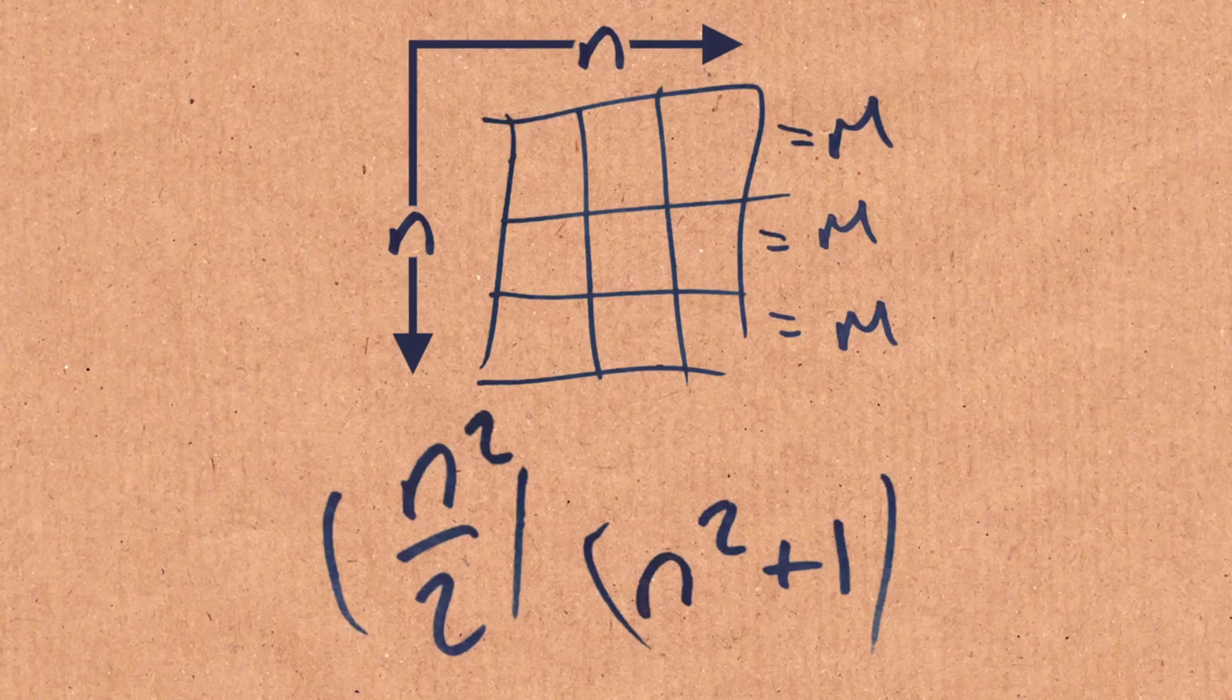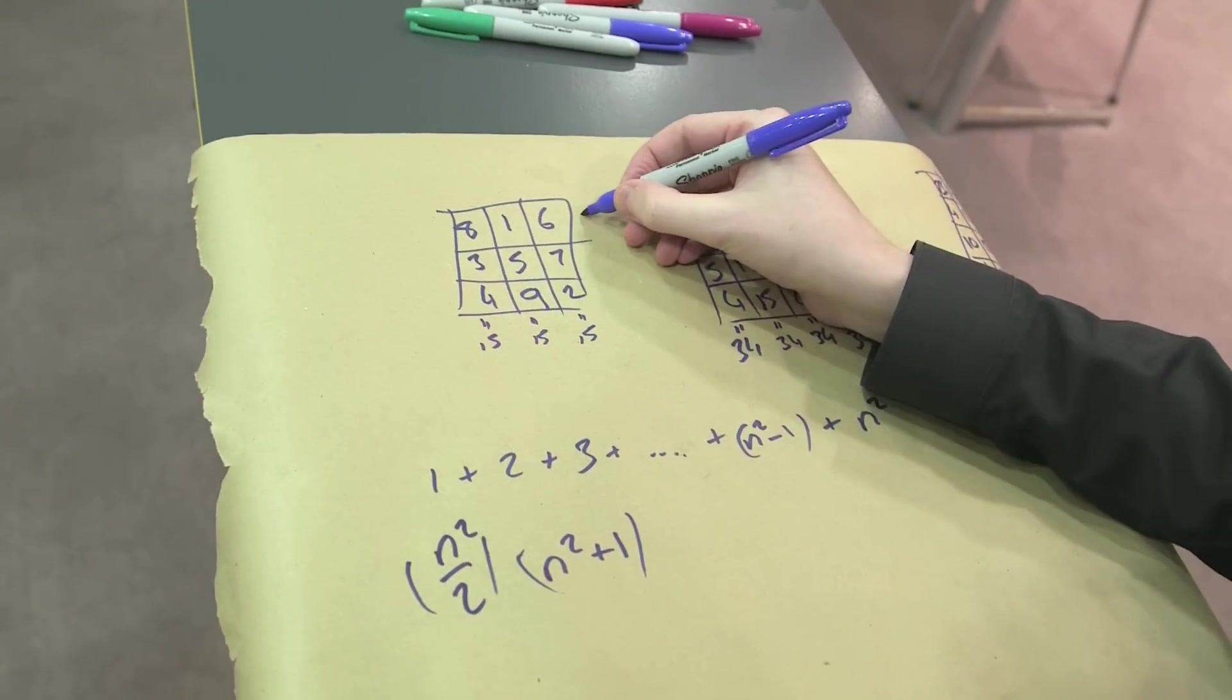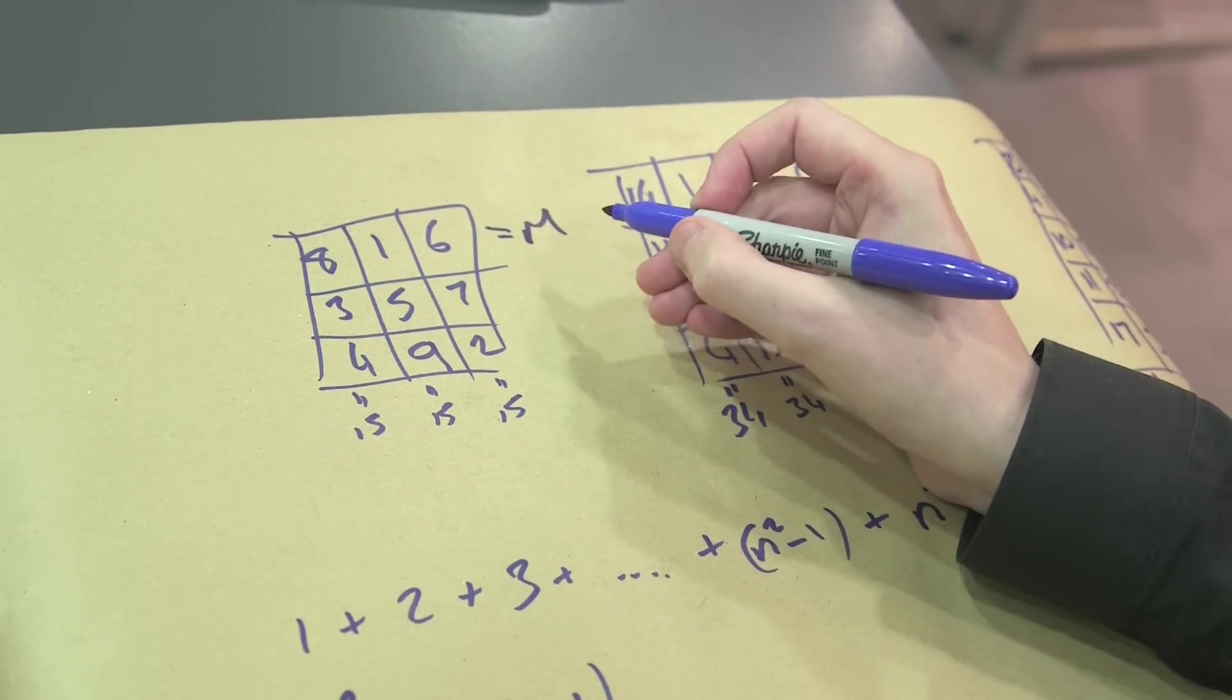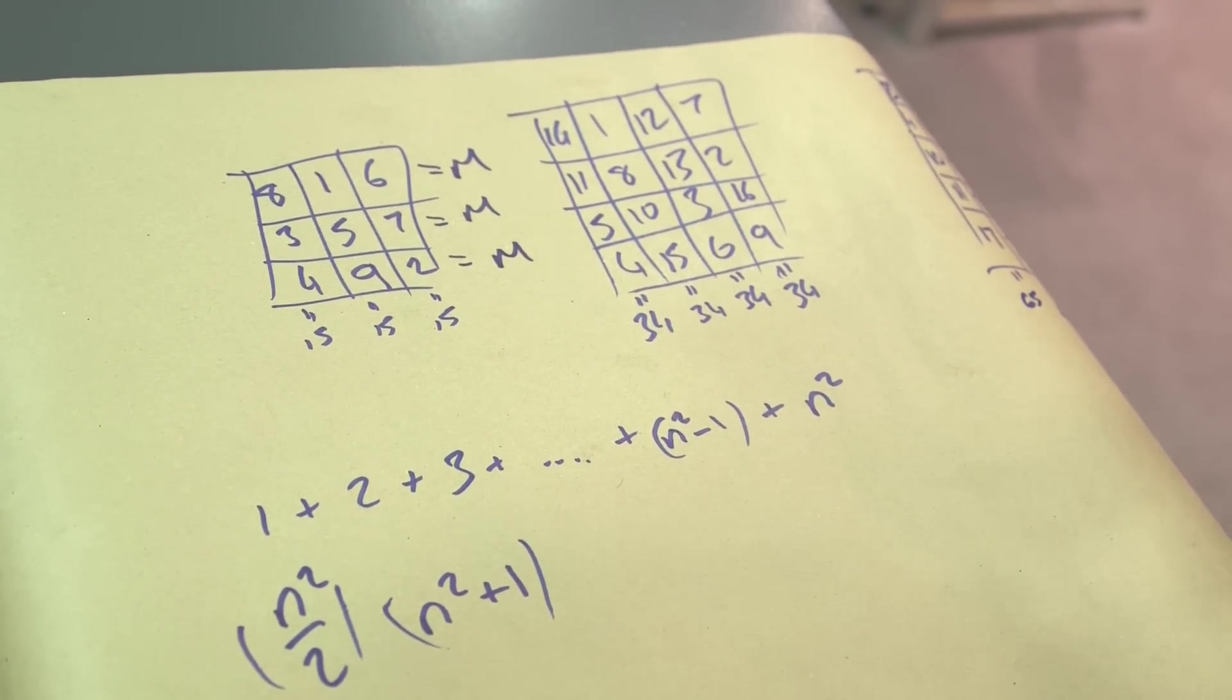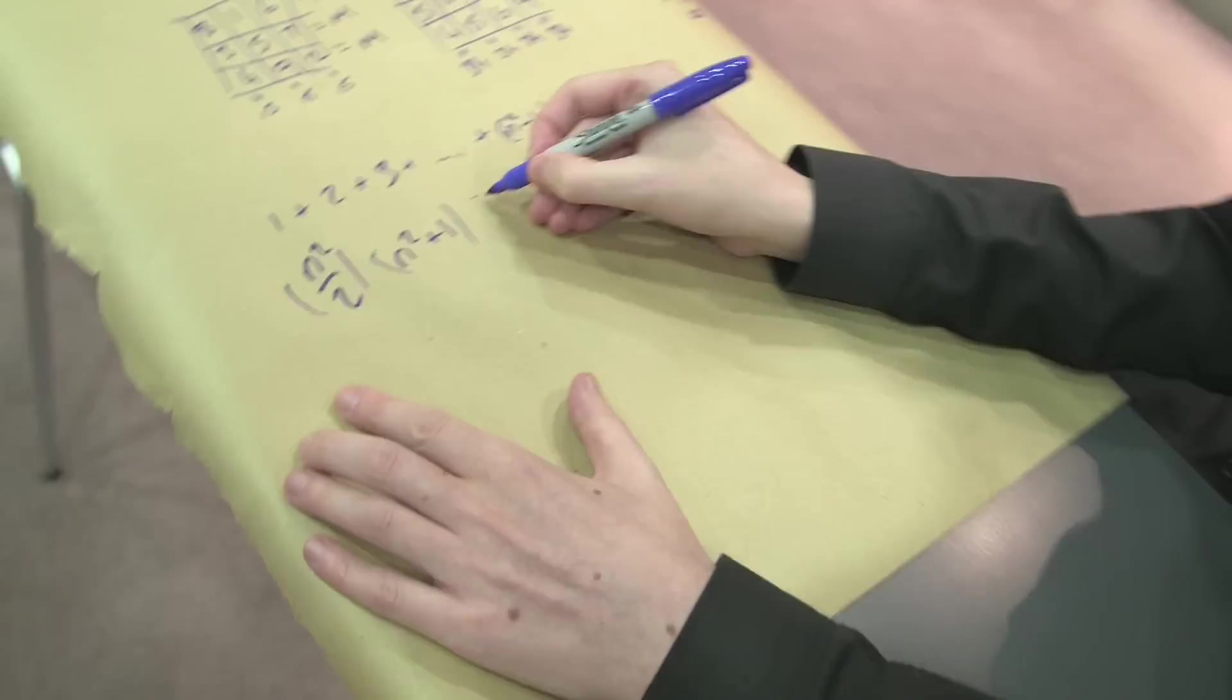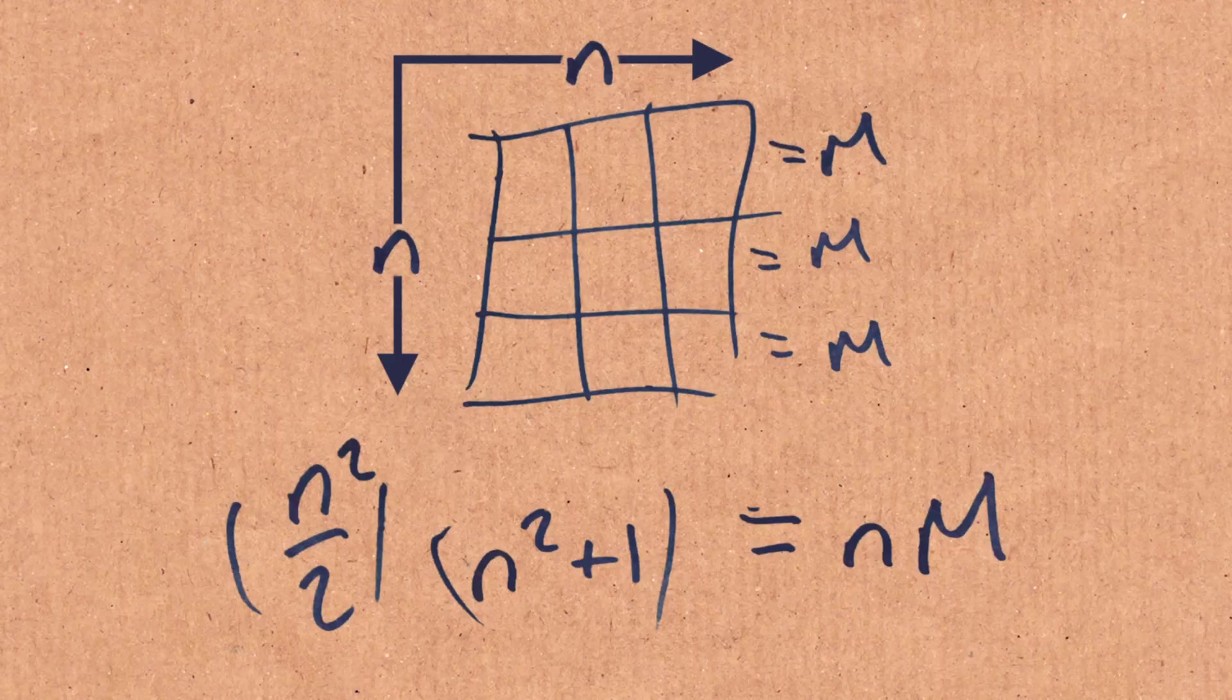But if we look at this in a different way, we're going to come at this from a different angle. We know each row is equal to the magic number. We'll call it m. So this is equal to m. The second row is equal to m. The third row is equal to m. Every row is equal to the magic number. How many rows are there? Well, there's n of them. So if you add all this together, another way of thinking about that is it's n lots of the magic number. And that means we can work out what the magic number is.